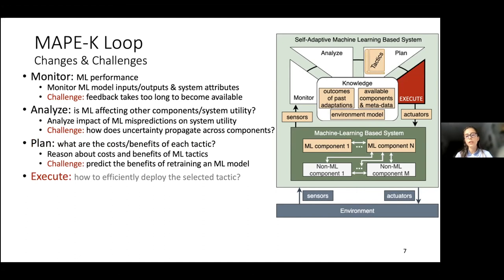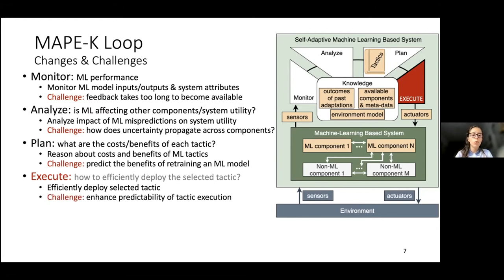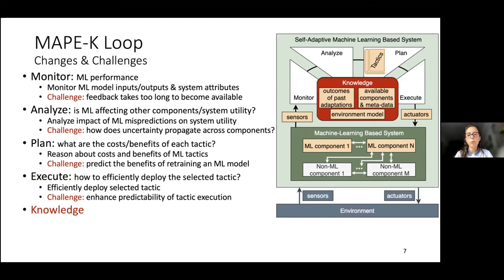Finally, in terms of the execute stage, how can we efficiently deploy the tactic selected by plan? The challenge here is how to ensure tactic predictability. It's not easy to predict the benefits of a tactic, so it's also not easy to ensure that whenever we execute a tactic it will have the benefits that plan predicted. We envision that the knowledge stage can help by keeping track of the outcomes of past adaptations, and this knowledge could guide the self-adaptation loop and help plan reason about the costs and benefits of the tactics.